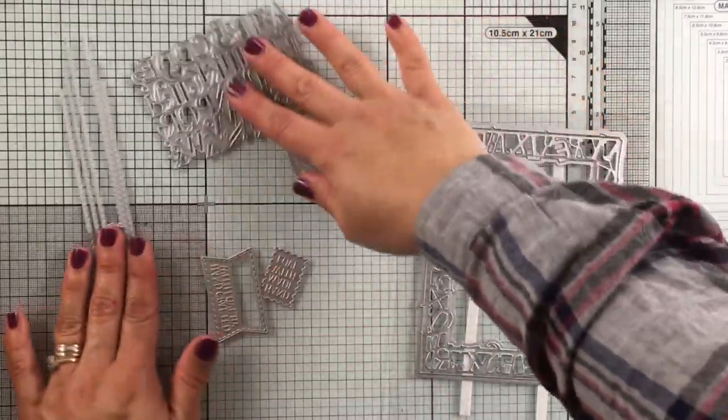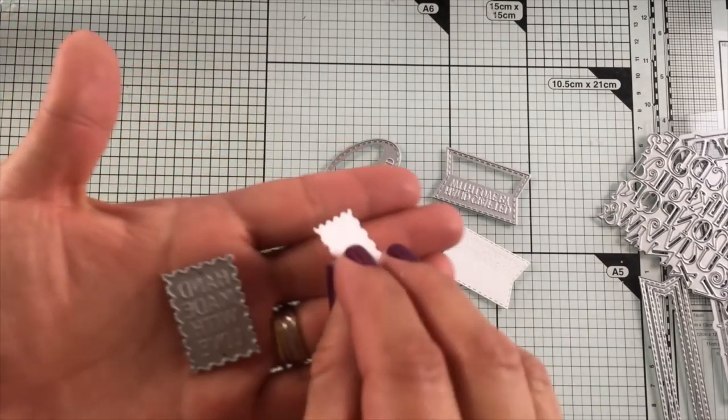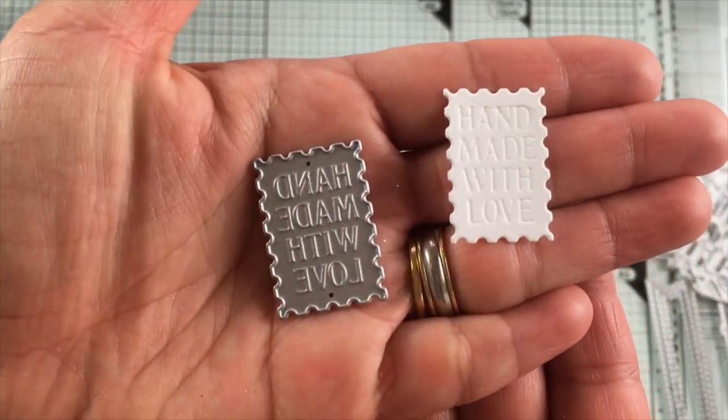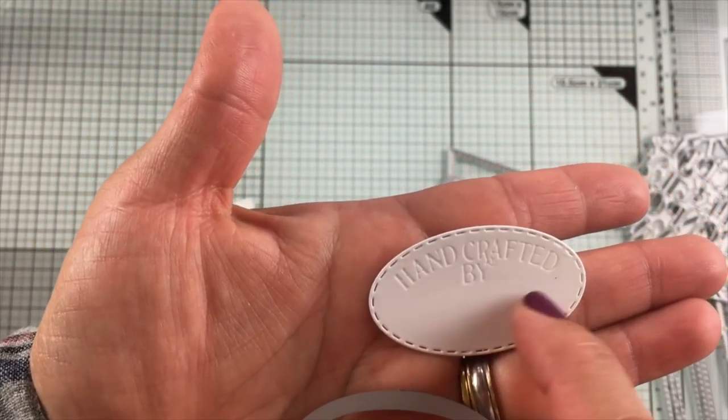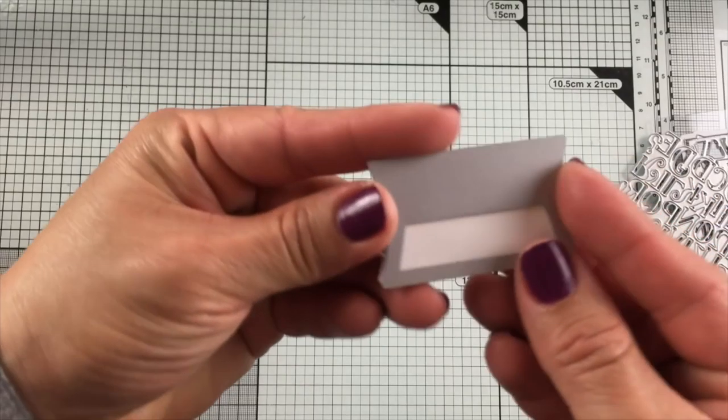So these are all the dies. Let me show you how they cut and emboss the paper. There's three different designs and you can just write your name there or stamp your name as well.